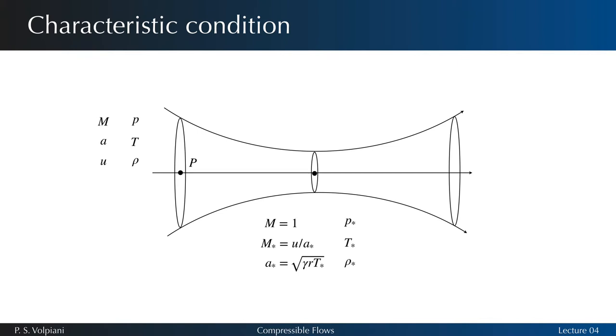We can also define a characteristic Mach number such as M star equals u over a star. The sonic variables can be calculated based on the static variables u, p, T, rho, a, and so on.